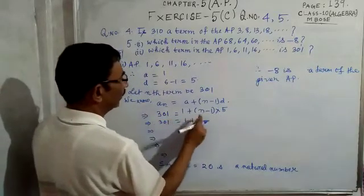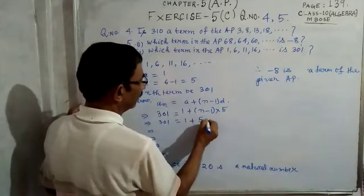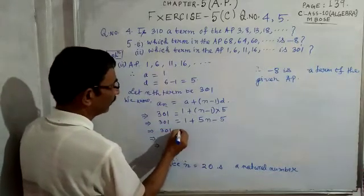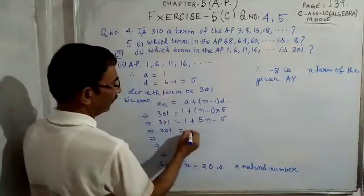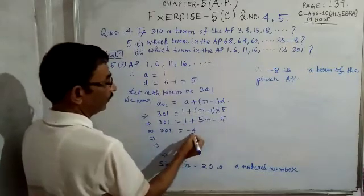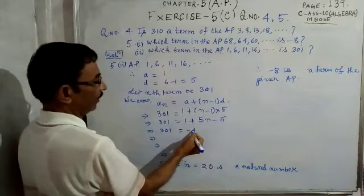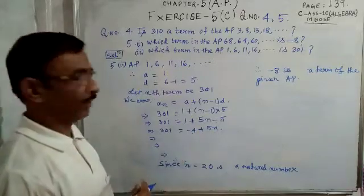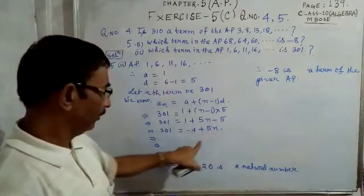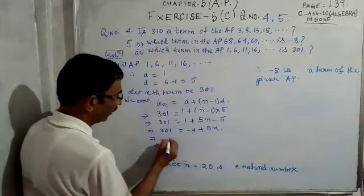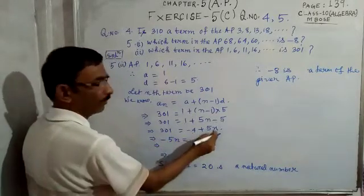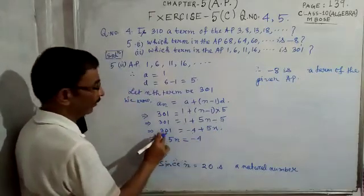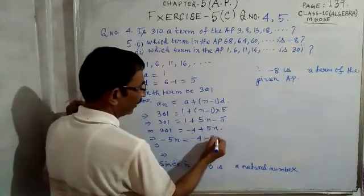Expanding: 301 = 1 + 5n − 5. Simplifying constants: 1 − 5 = −4, so 301 = −4 + 5n. Bringing 5n to the left: −5n = −4 − 301, giving −5n = −305.